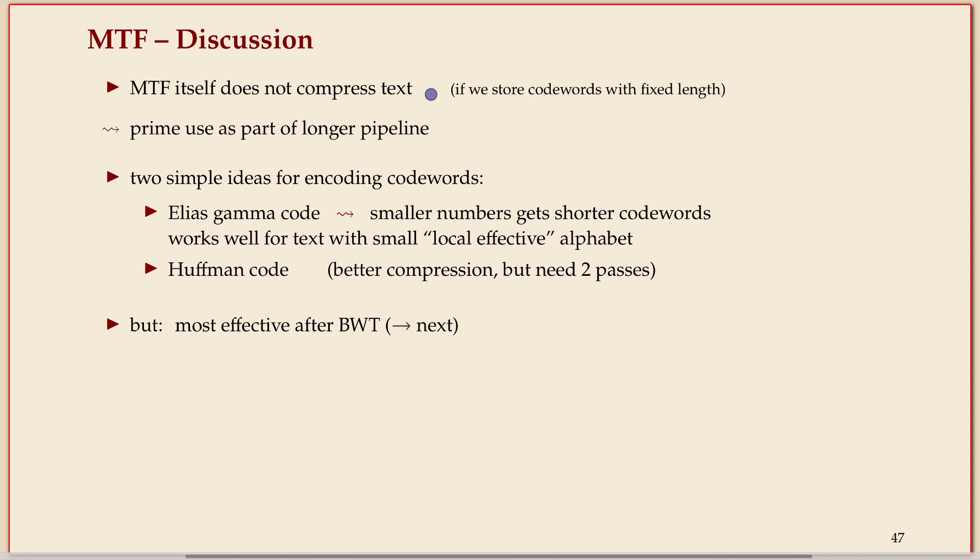As I said before, it doesn't compress by itself, but because of these two properties it sometimes can bring out compressibility that's otherwise hidden. If you wanted to encode the code words you have to think about that, but you usually put some other things after it. The key application of Move to Front at least historically comes from after another transform, and that's the one I want to look at next. Yeah, there's different options how to encode the code words - I don't want to get too much into the details of that.